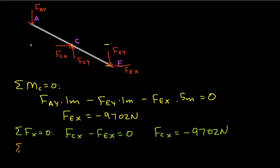And we have the sum of forces in the Y direction equal to zero. This will give us minus FAY plus FCY minus FEY is equal to zero. So FCY is the sum of FAY and FEY, and that is 2,205 newtons.